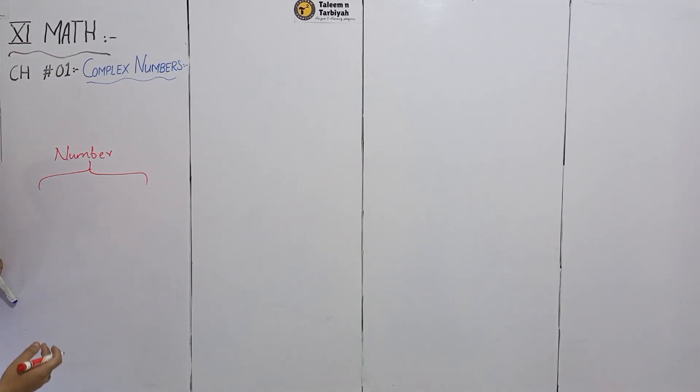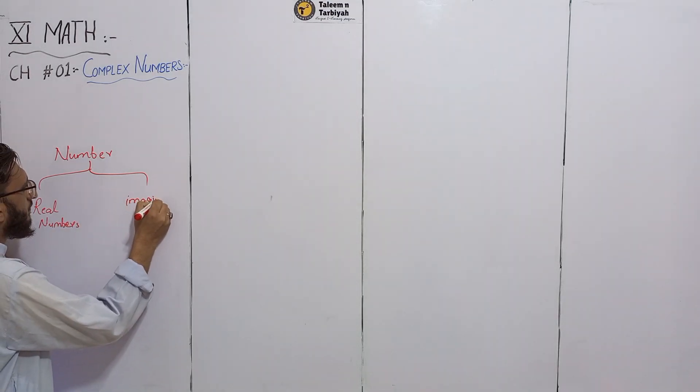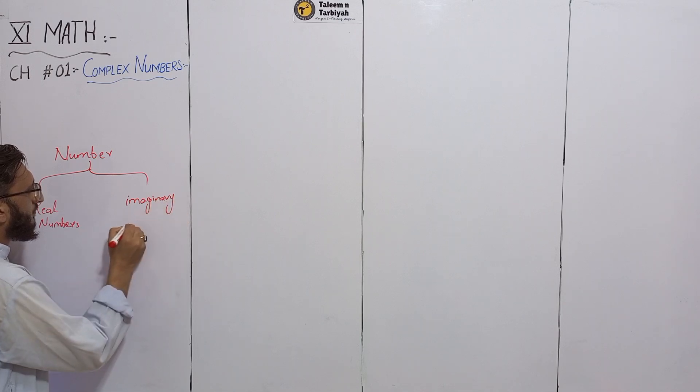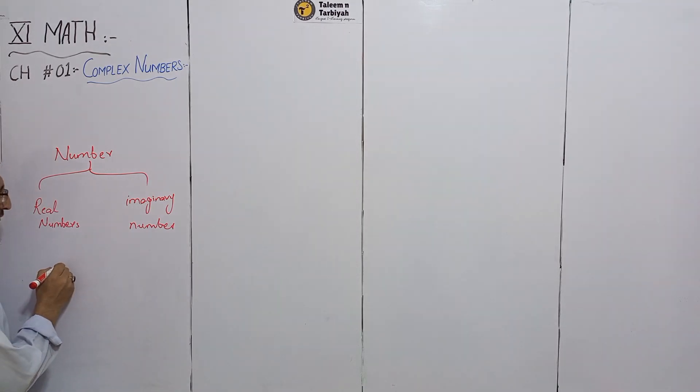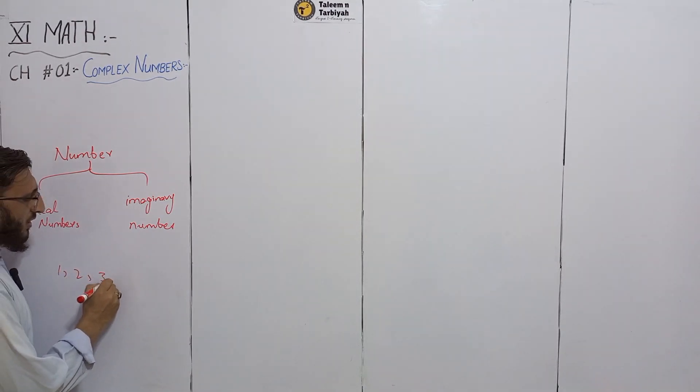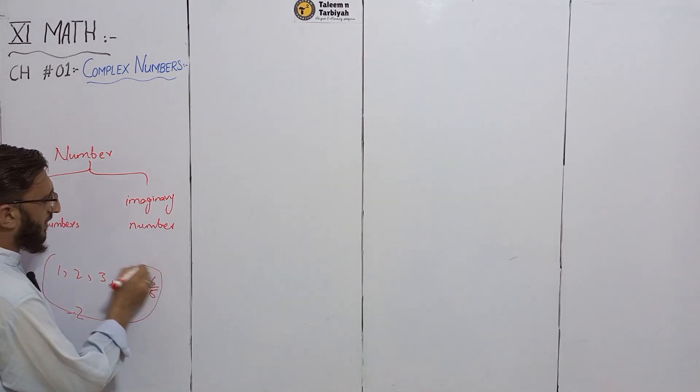We have two types of numbers. One is real numbers: one, two, three, three upon two, six upon five, minus two. We have all our real numbers.